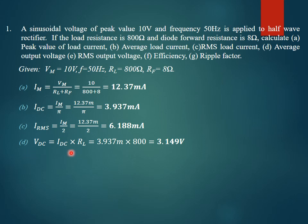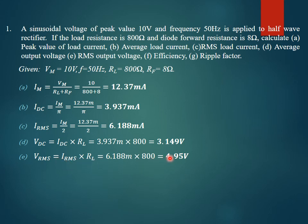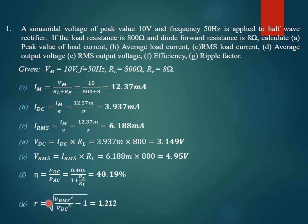The DC voltage is obtained by multiplying IDC by RL. The RMS voltage, VRMS, is determined by multiplying IRMS by RL, giving 4.95 volts. The efficiency formula, since RF is given, is 0.406 / (1 + RF/RL), which gives 40.19%. The ripple factor, calculated as √(VRMS² / VDC² − 1), gives 1.118, which is greater than 1.